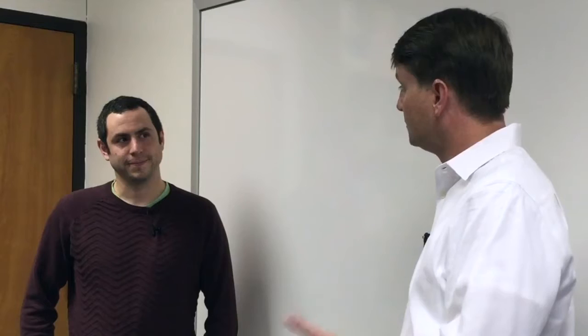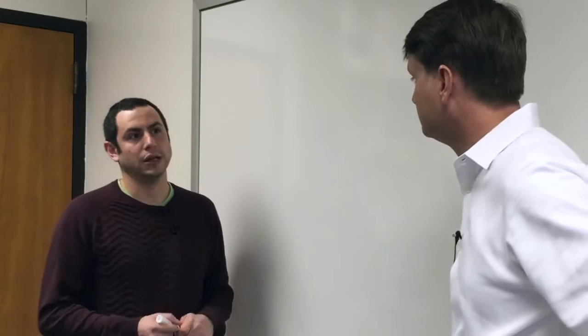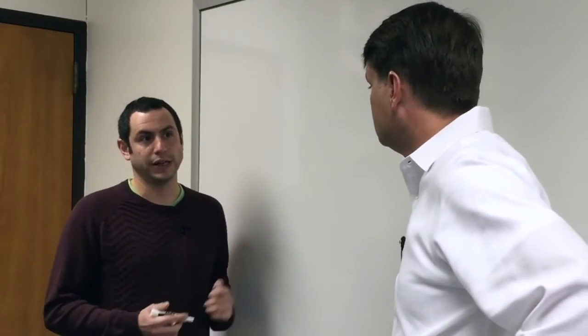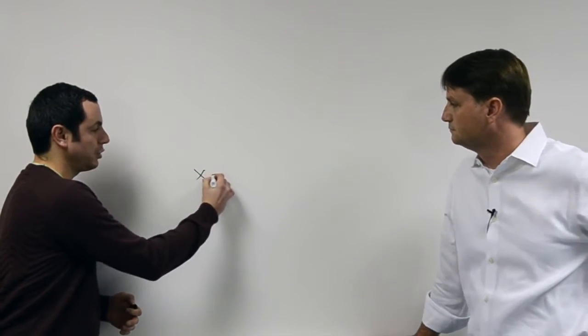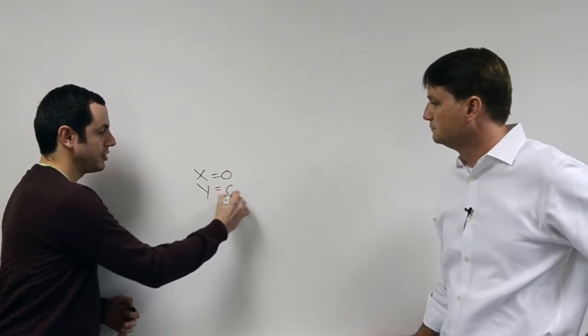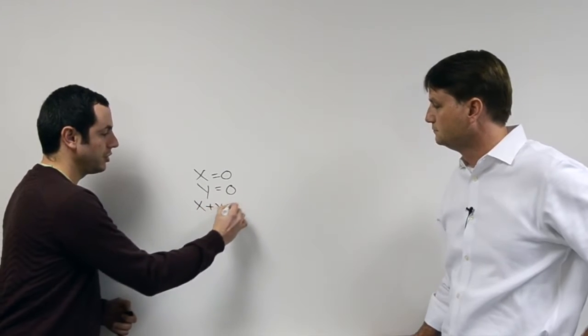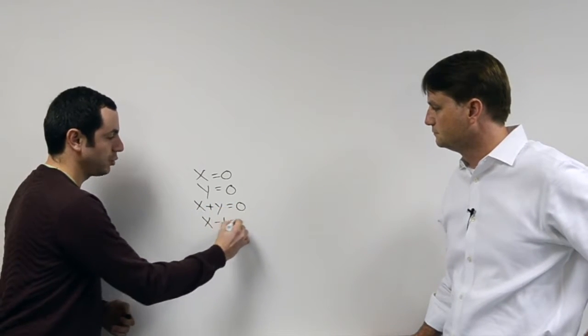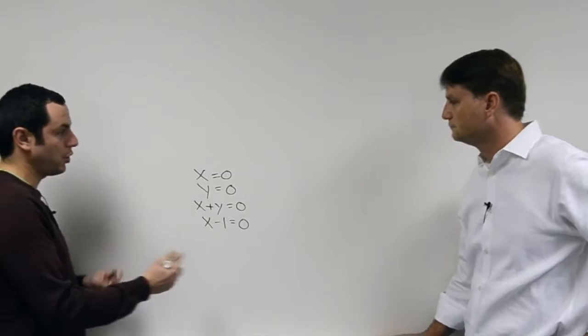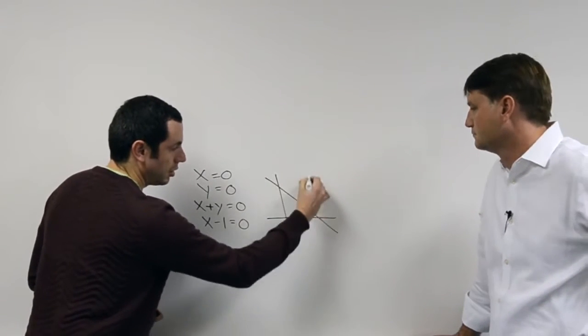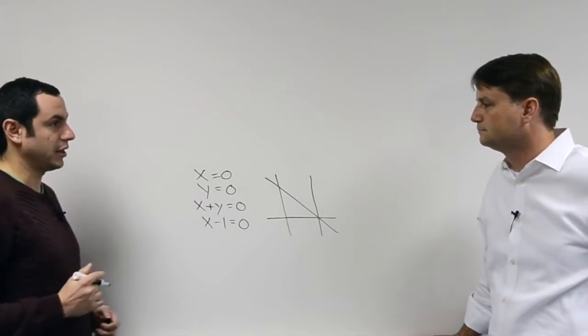So Moshe, can you set up the theorem that you proved? Sure. We have a finite collection, a finite list of complex projective lines in complex projective space. For example, something like x equals 0, y equals 0, x plus y equals 0, and x minus 1 equals 0. And instead of just the equations, we can think about drawing this. Just as you would expect.